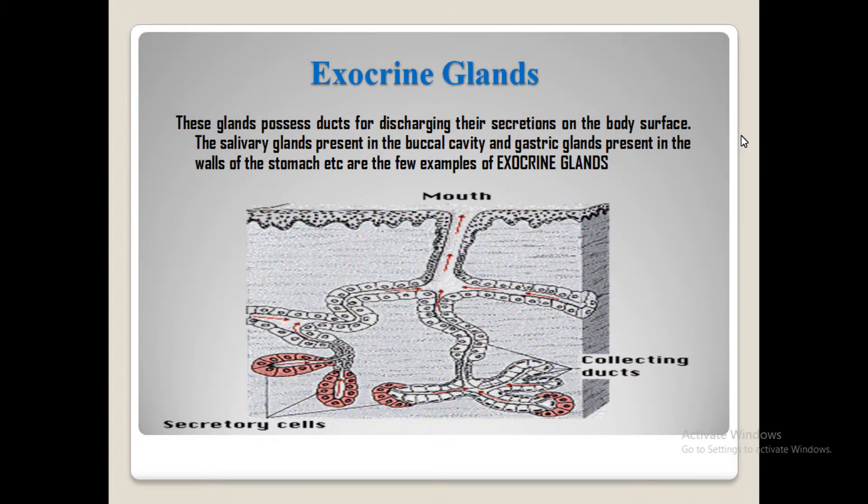Now let's talk about exocrine glands. Exocrine glands are basically those glands that secrete their secretions to target cells. When we compare it to endocrine glands, those are the glands that don't use ducts to deliver secretions to target cells.